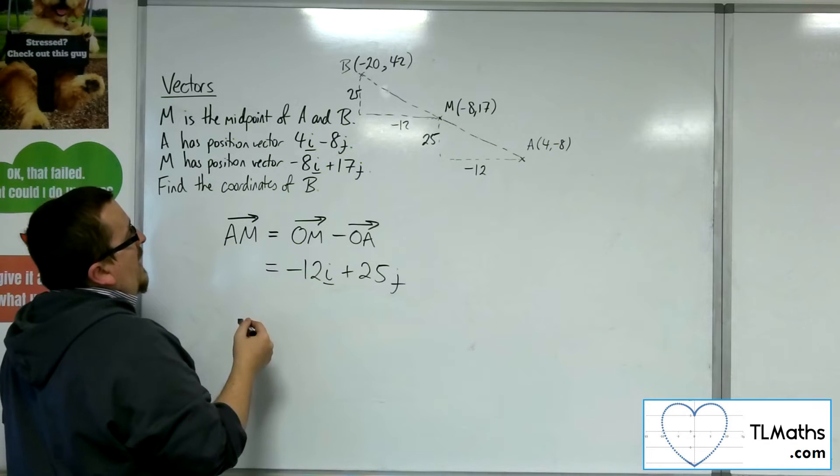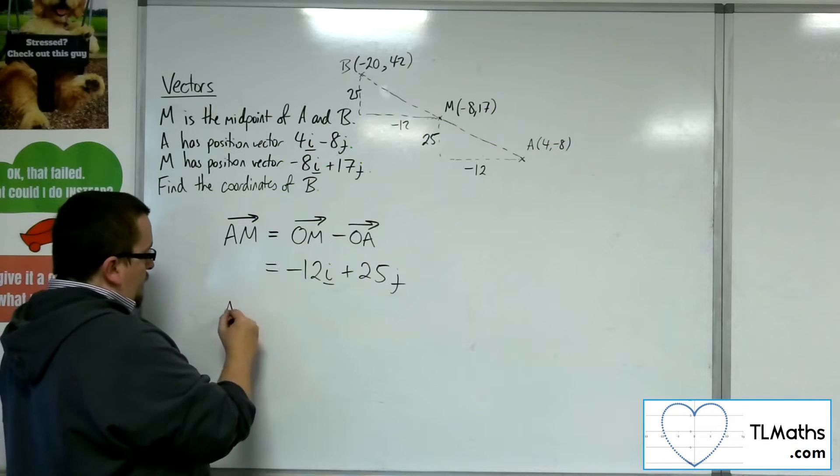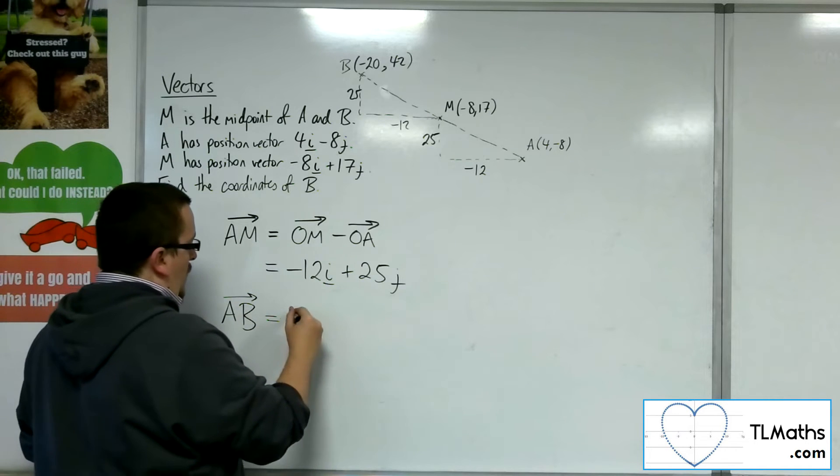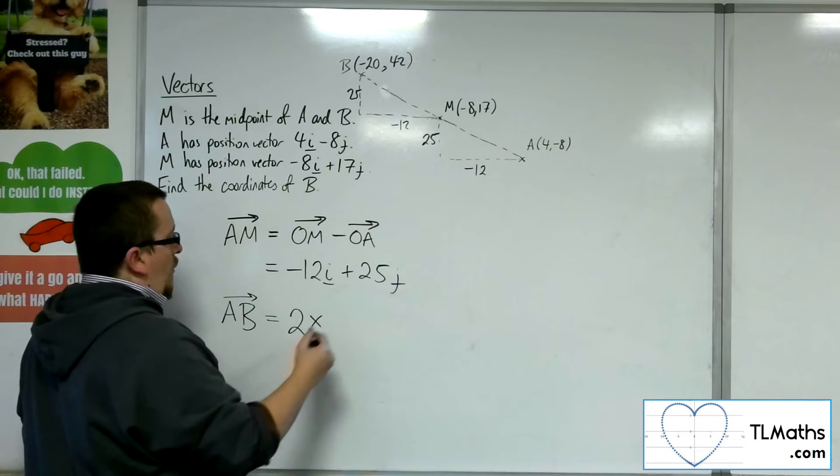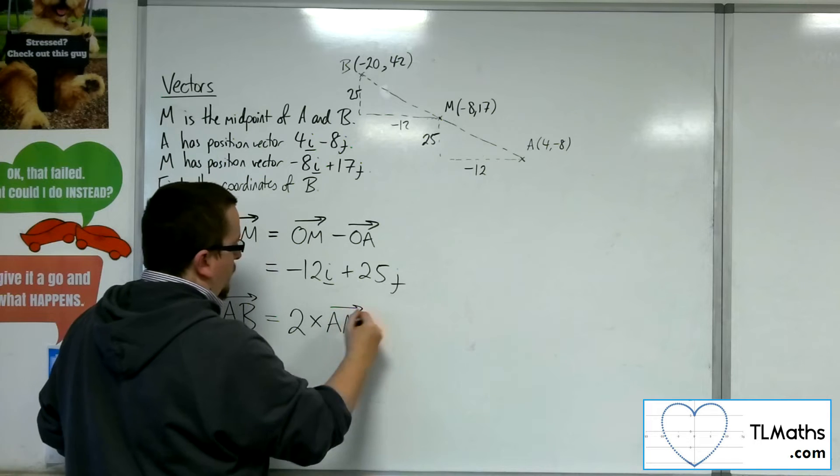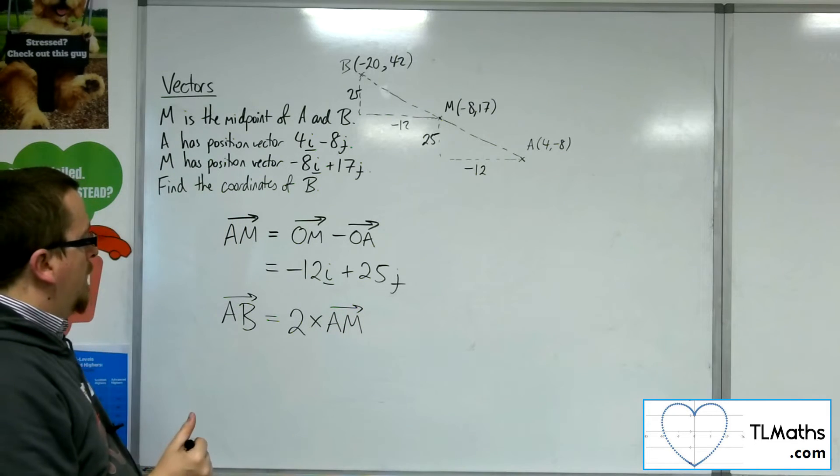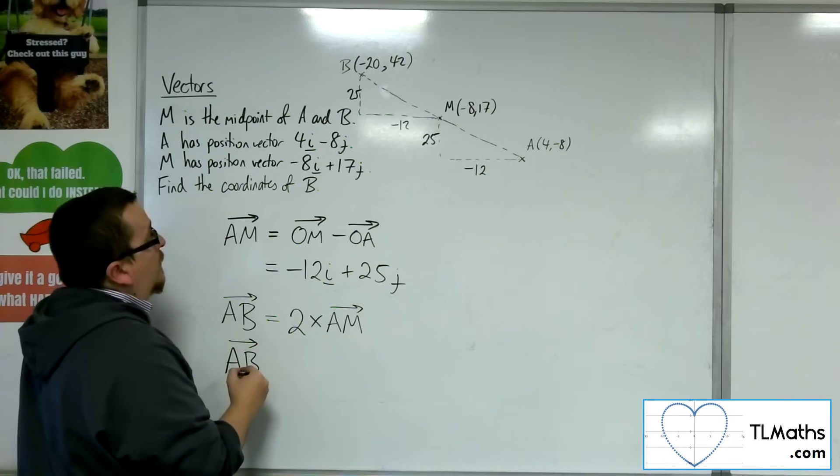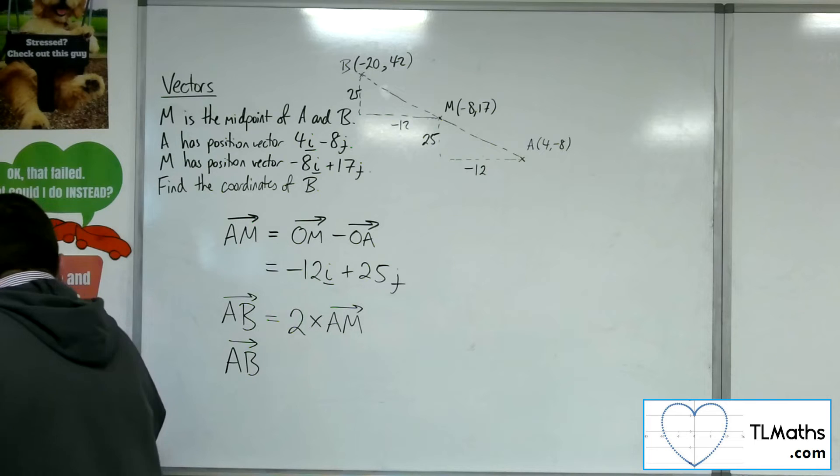Then to get from A to B is going to be 2 lots of AM. OK, so AB, oh sorry, the coordinates of B, sorry, not AB.